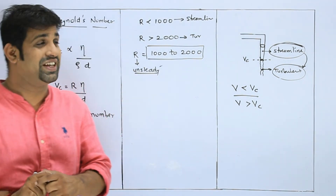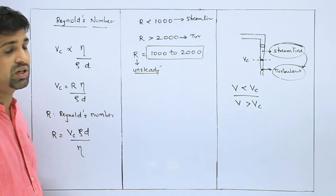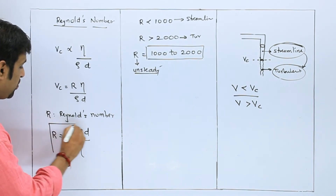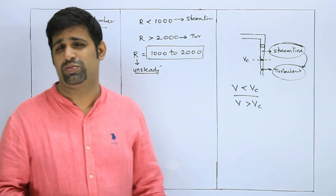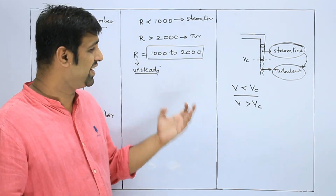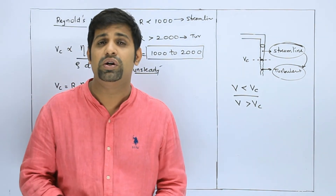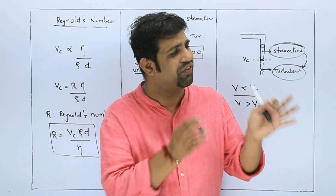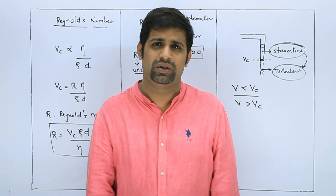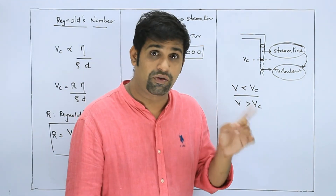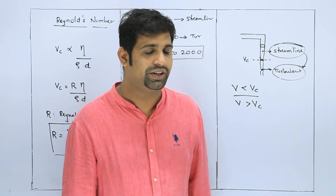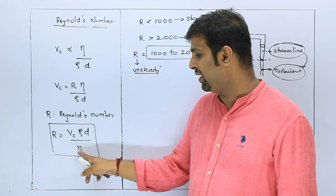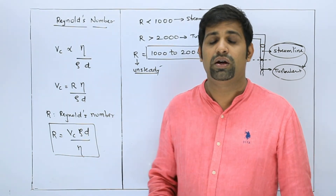So you will understand the physical significance of the Reynolds number. This is the Reynolds number formula — you can remember it, discuss it, and write it down easily. Remember that Reynolds number is used to identify the type of flow. What you should know is which fluid it is — meaning its viscosity and density. Viscosity and density depend on the liquid — material to material. For example, if you take glycerin, honey, or water, each has different values.